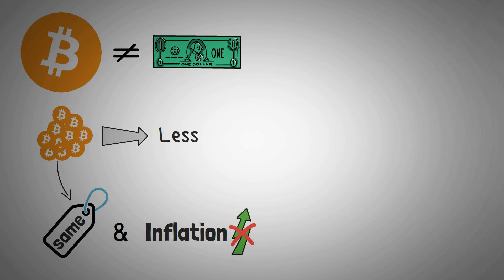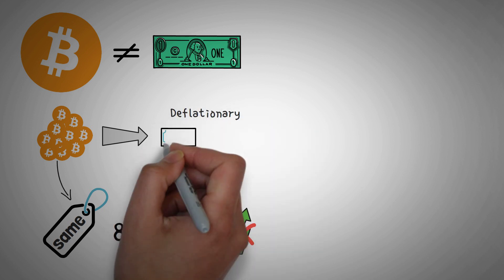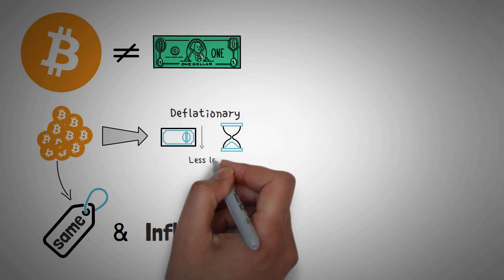In fact, inflation of Bitcoin happens less and less as time goes on. Actually, eventually, Bitcoin theoretically will become deflationary, meaning as time goes on, there will be less and less of it. Why?